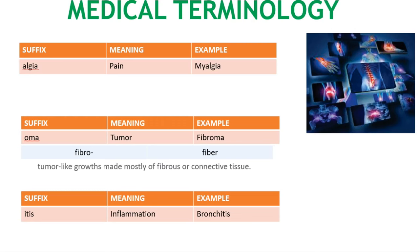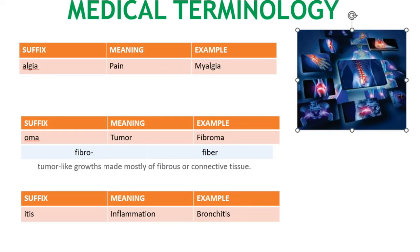These are the suffixes. -Algea or -algia means pain — myalgia is an example. -Oma means tumor — fibro means fiber, so fibroma refers to tumor-like growths made mostly of fibrous or connective tissue. As we know, -itis means inflammation — bronchitis is an example.